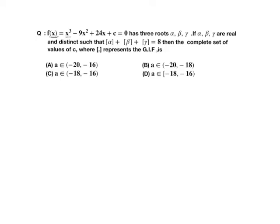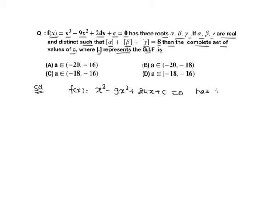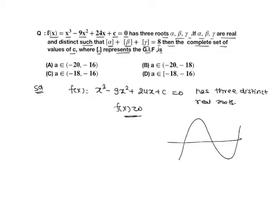The next problem is f(x) = x³ - 9x² + 24x + c = 0, which has three roots α, β, γ. If α, β, γ are real and distinct such that ⌊α⌋ + ⌊β⌋ + ⌊γ⌋ = 8, find the complete set of values of c, where the box represents the greatest integer function. Given that f(x) = 0 has three distinct real roots, we need a graph with a local maxima and local minima.